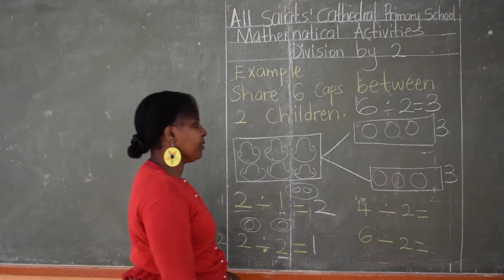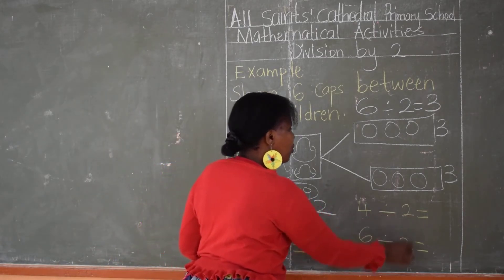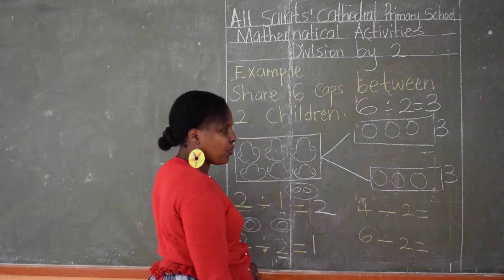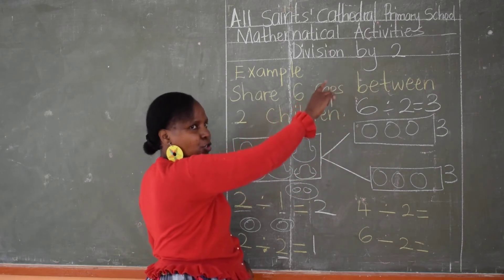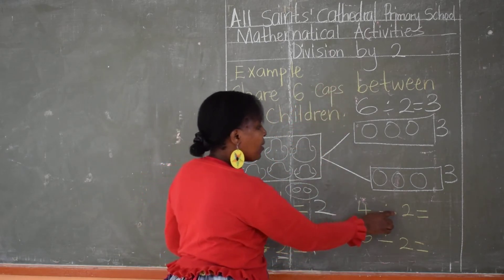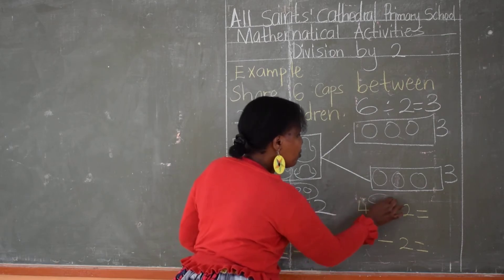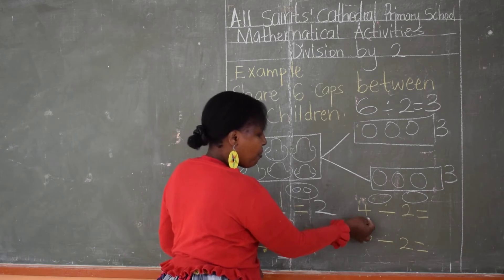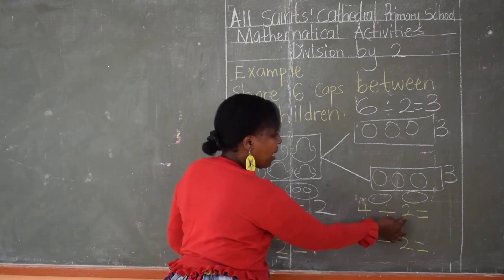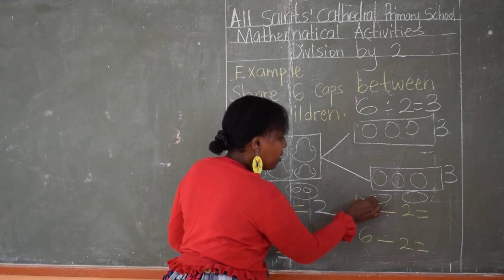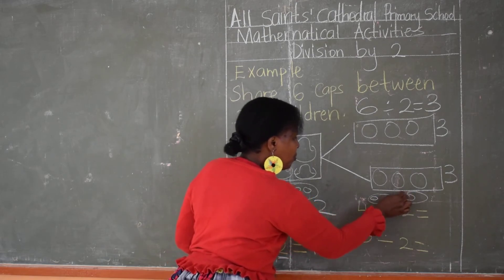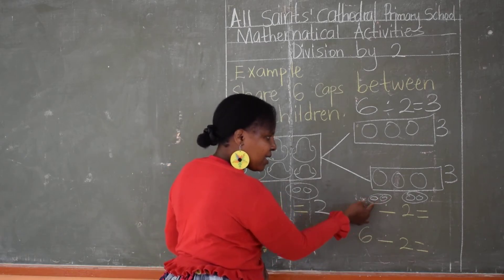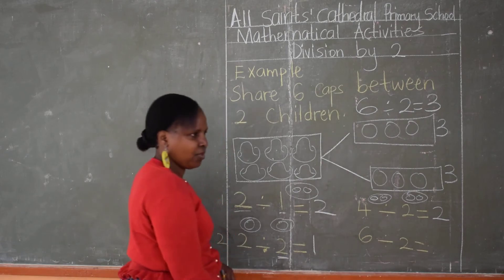Our next example is four divided by two. We are going to create two groups. Remember, it is division by two. So if it is four divided by two, we create two groups and count up to four. We have maybe four mangoes, so we distribute among two. We start counting one, two, three, four. Four divided by two — what is our answer? Two. Very good.